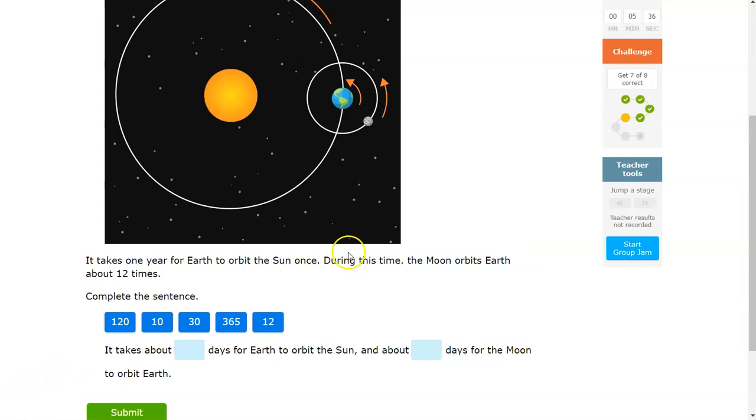For this question, it's asking you to do some conversions. It tells you straight up that it takes one year for Earth to orbit the Sun. And it takes the Moon 12 times to orbit the Earth in that same time frame.